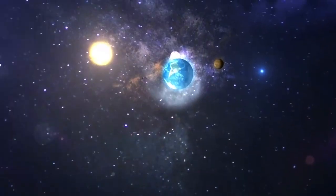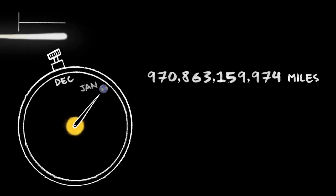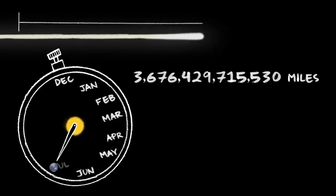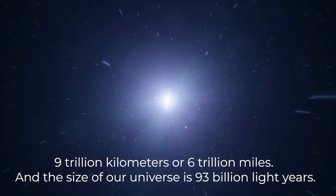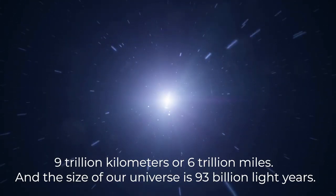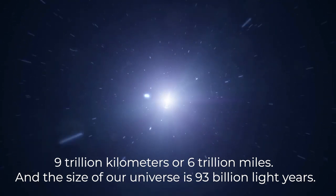Now, there are 93 billion light years across the universe. One light year is equal to 63,000 astronomical units, which means that it is the same as 9 trillion kilometers, or 6 trillion miles. And the size of our universe is 93 billion light years.